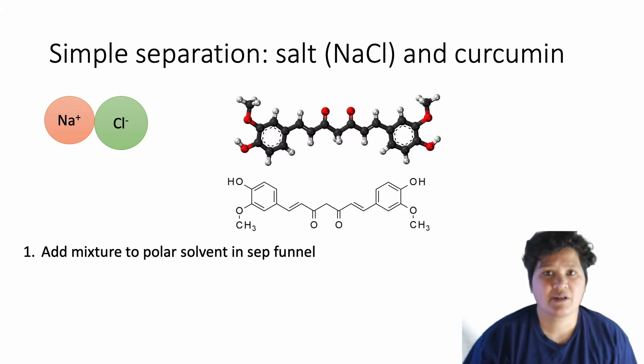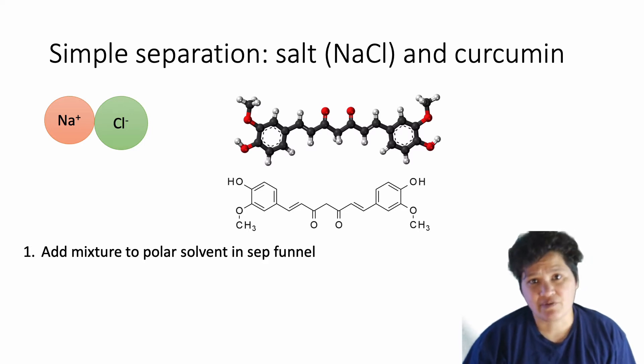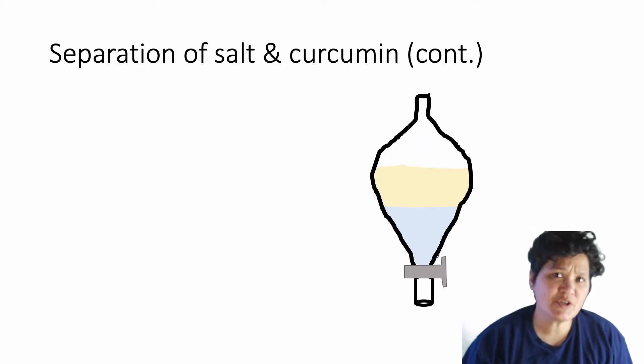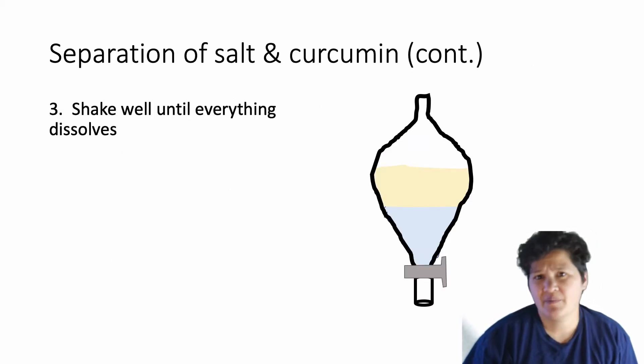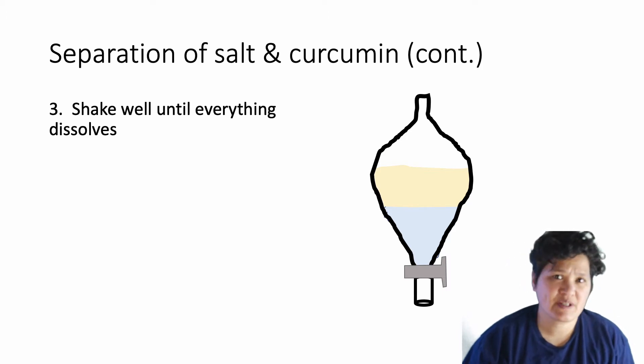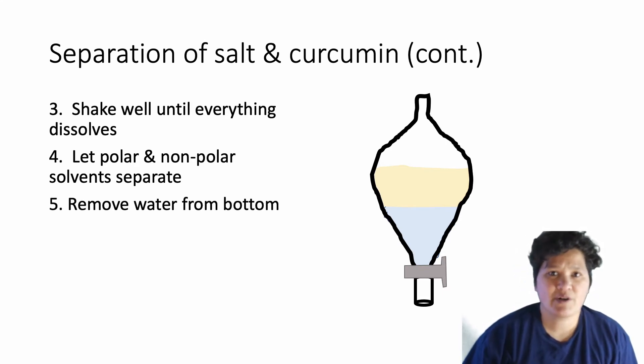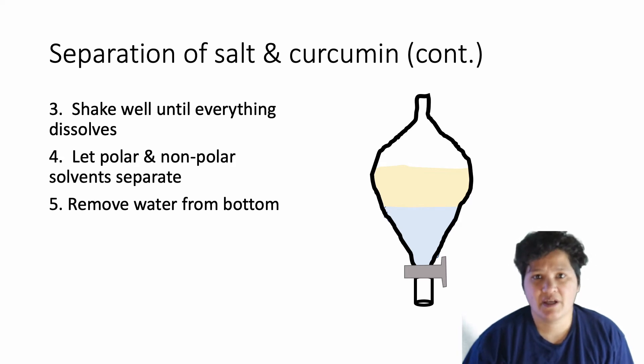I would start by putting the mixture of solids into a polar solvent like water, inside of a separation funnel, and then adding a non-polar solvent like hexane. At this point, you can shake everything until the solids dissolve. And because of the different intermolecular forces of the two substances, the curcumin will end up dissolving mostly in the hexane, while the sodium chloride will dissolve in the water. Because the hexane is less dense, it will separate and float on top of the water. At that point, you can remove the water from the bottom of the sep funnel and evaporate it to remove the salt.